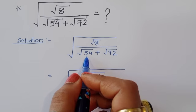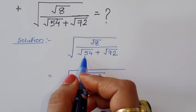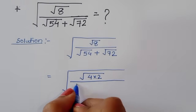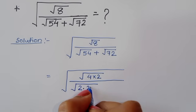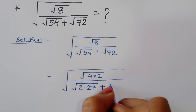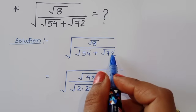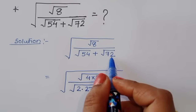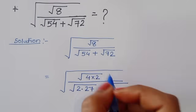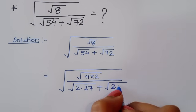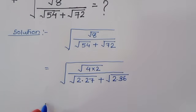Divided by: square root of 54. If we factor 54, we get 2 times 27. So we write square root of 2 times square root of 27. Plus, for 72 — the biggest factor is 2 times 36. So we write square root of 2 times 36.